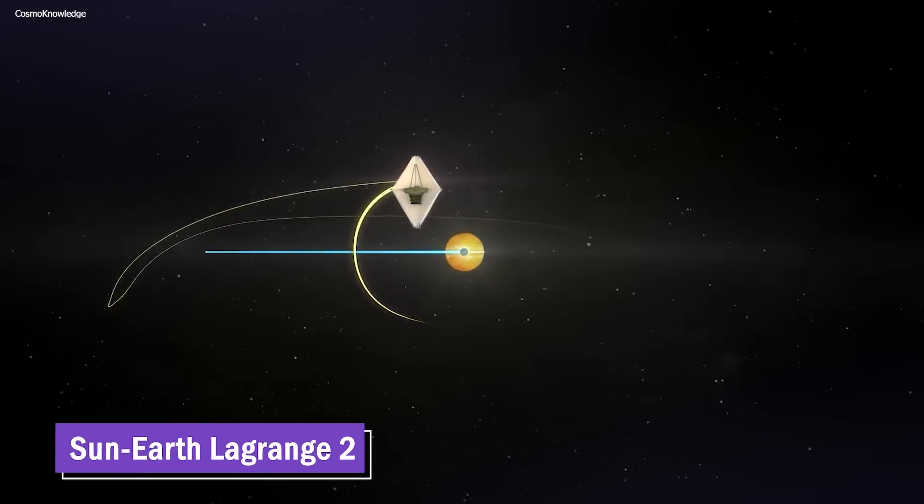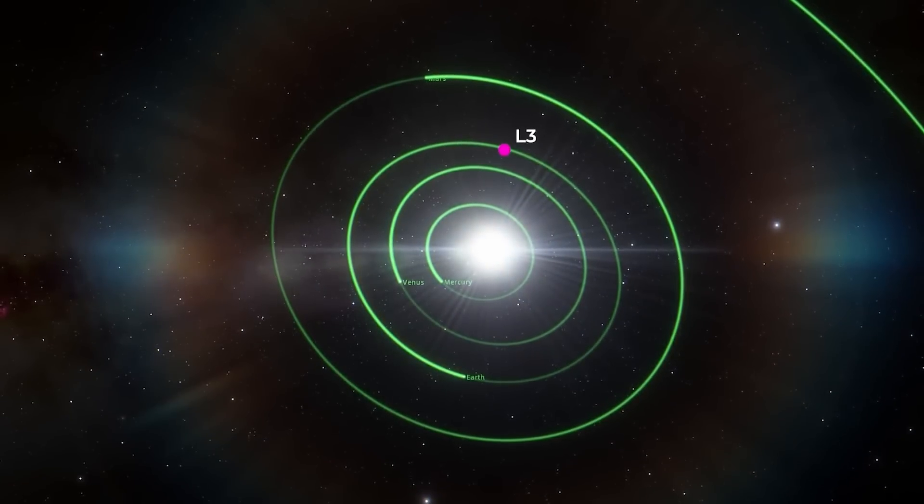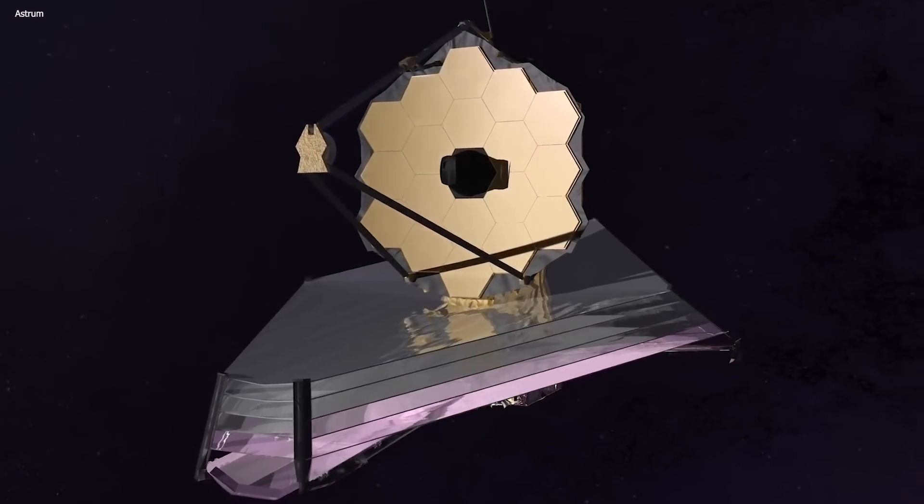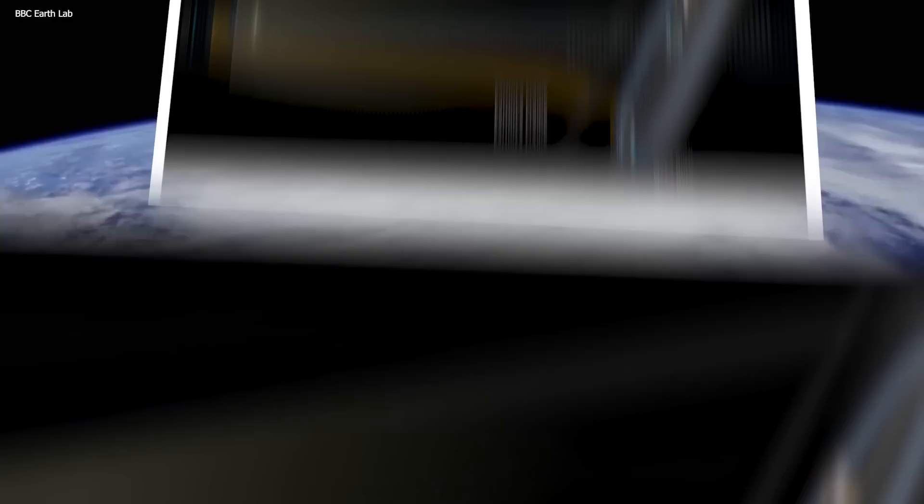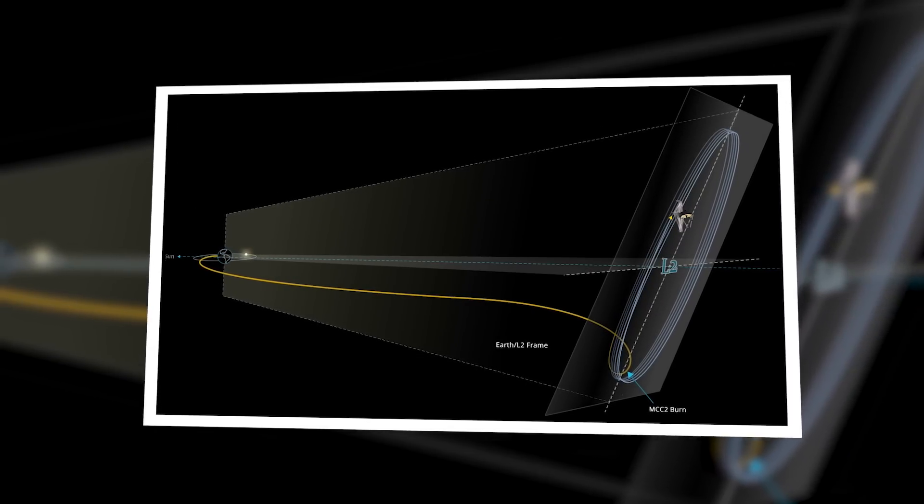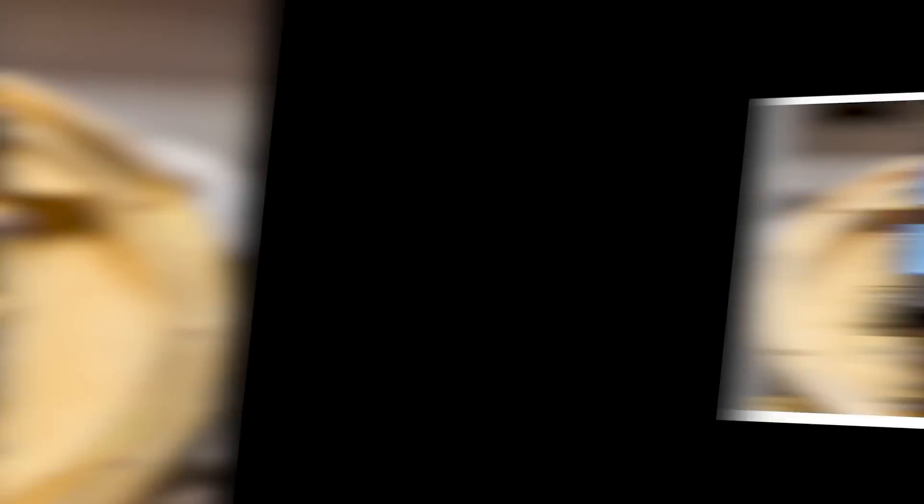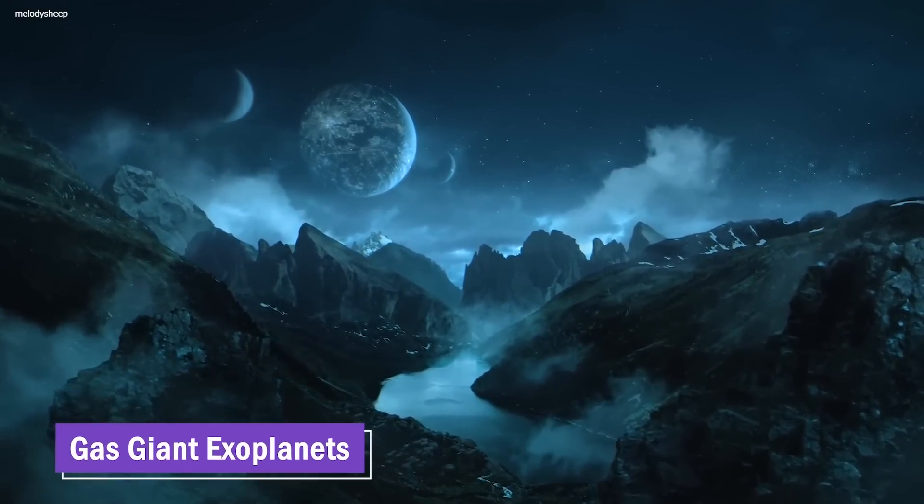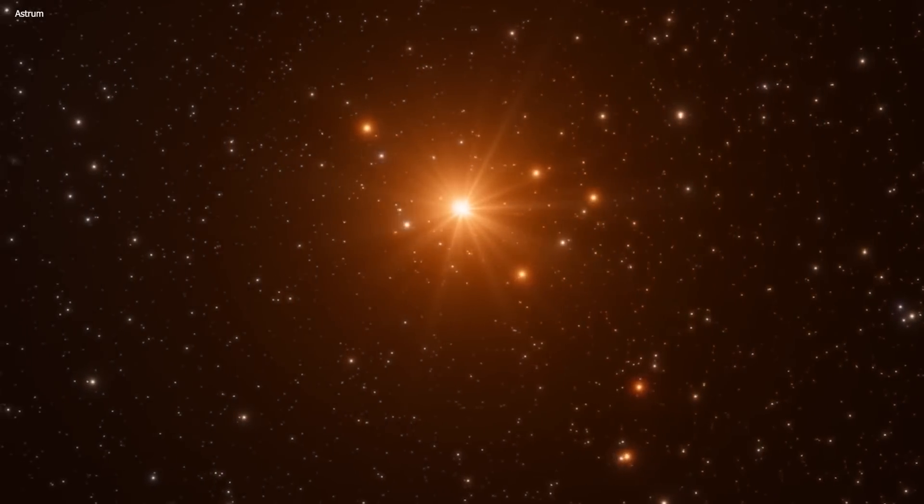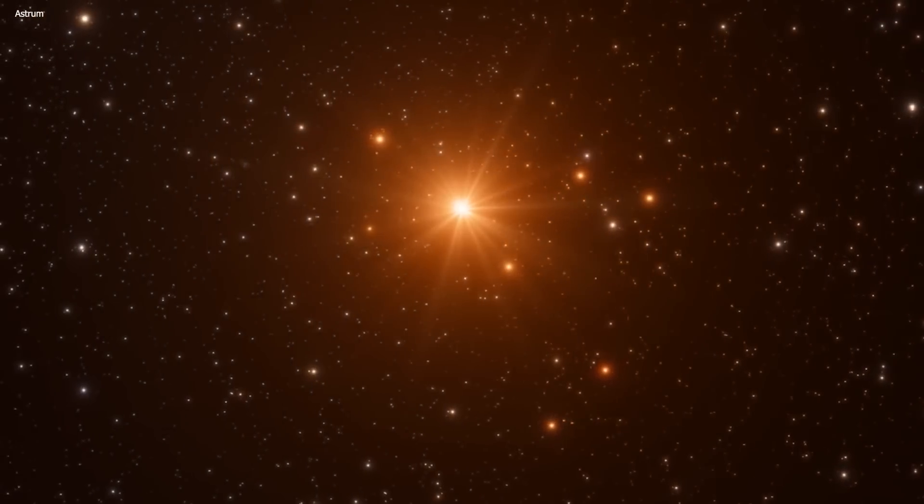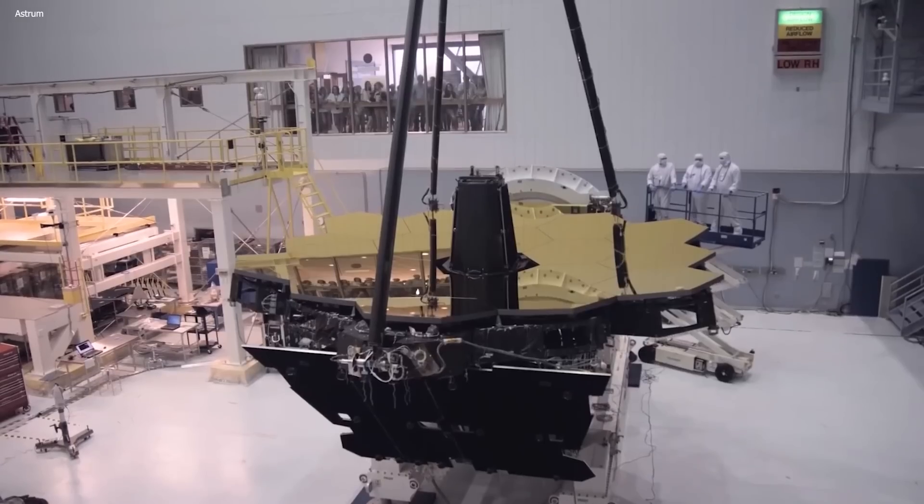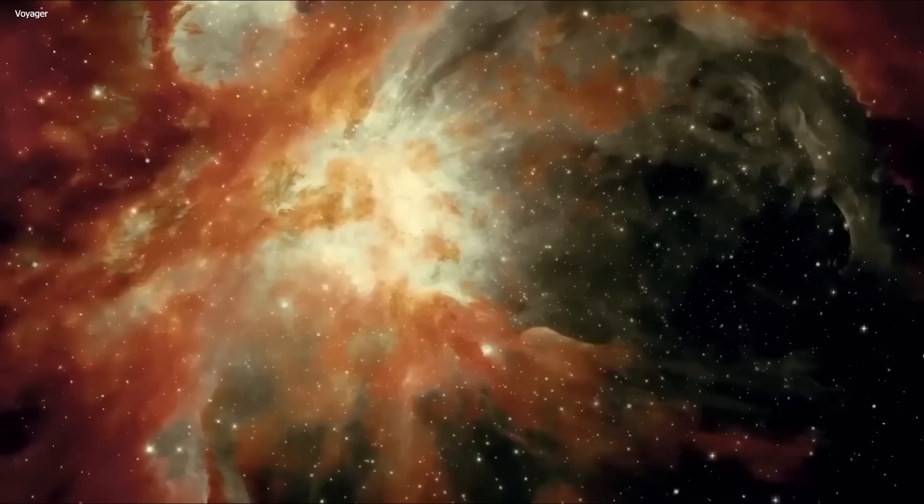Located at the Sun-Earth Lagrange 2 point, approximately 1.5 million kilometers from Earth, the JWST benefits from a wide view of the cosmos and remains shielded from the Earth's atmosphere. This positioning allows the telescope to escape the interference caused by atmospheric turbulence, enabling clearer and more accurate observations. With its advanced infrared instruments, it can study the atmospheres and compositions of gas-giant exoplanets, contributing to our understanding of the formation and evolution of planetary systems beyond our own. This telescope was built to push boundaries and get us information that would have been unheard of, even five years ago, and it's doing just that, in a few different ways.